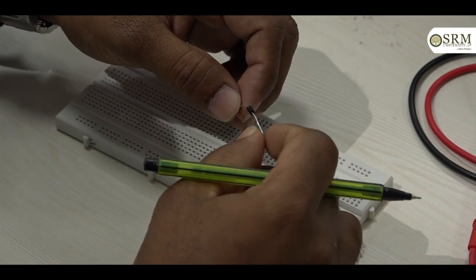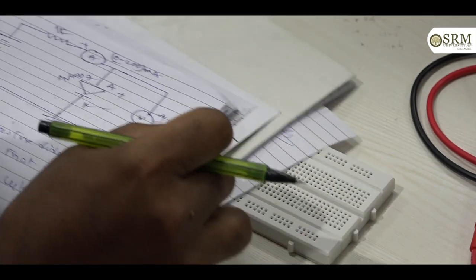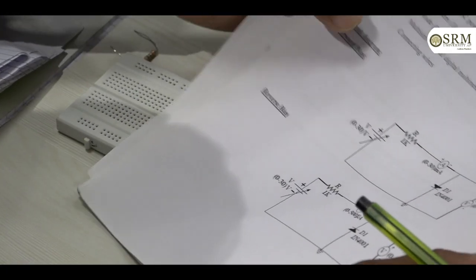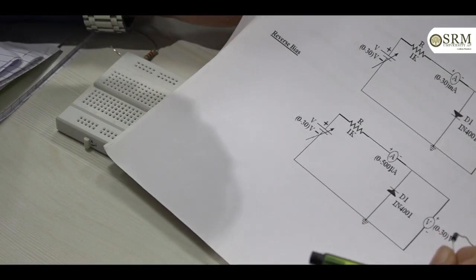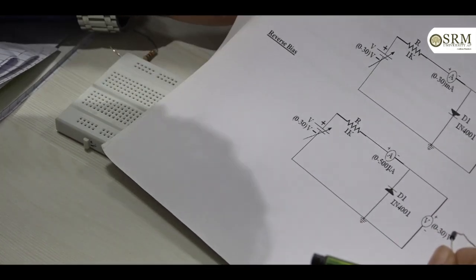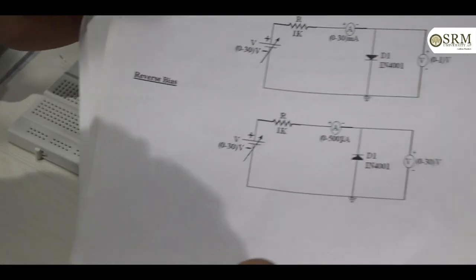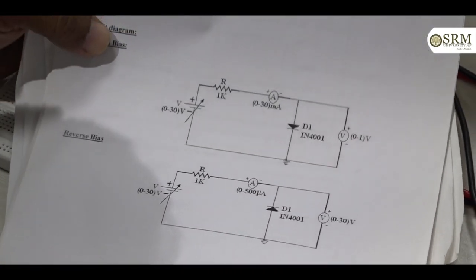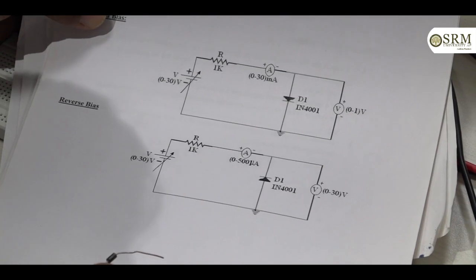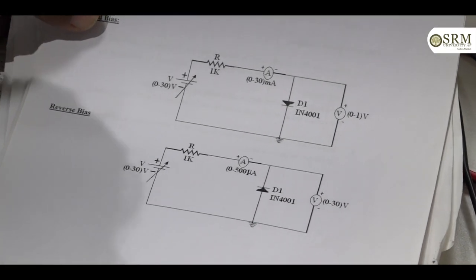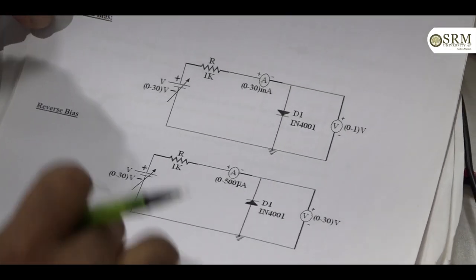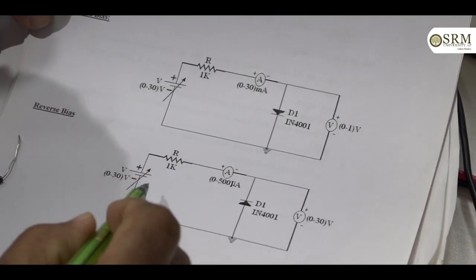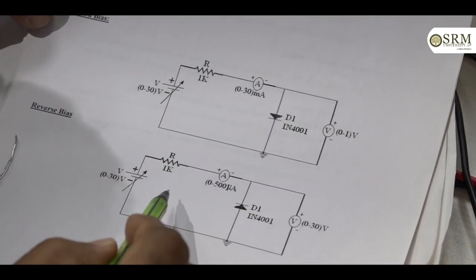PN junction diode characteristics. This is the circuit for PN junction diode characteristics. In this experiment, we study voltage versus current characteristics. The first configuration is forward bias and the second one is reverse bias.